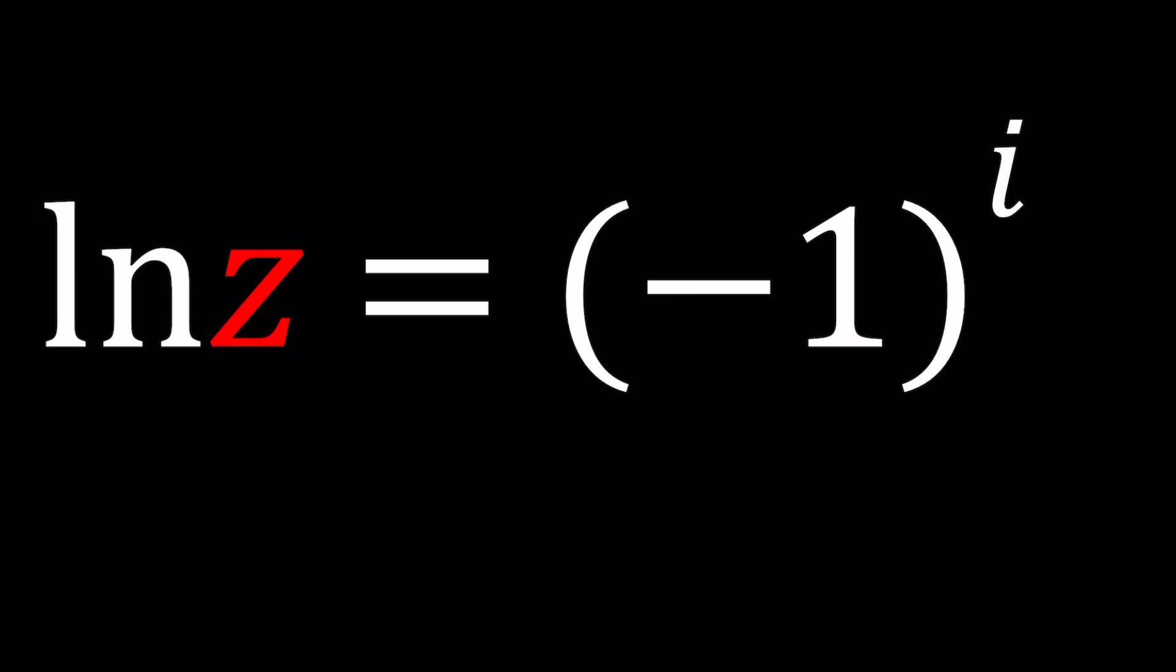But since we have ln z and we know that z is the same as e to the ln z, even in the complex world, we can go ahead and do the following. e to the power ln z from here is going to be e to the power negative 1 to the power i. So z is equal to that.